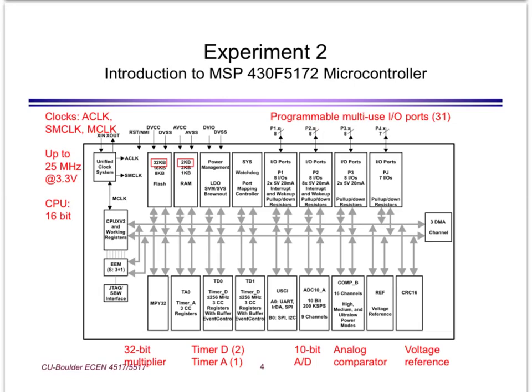Here is a block diagram of the microcontroller. It has, as usual, a host of programmable multipurpose IO ports, and a variety of peripherals that are very useful in the lab — in particular high-resolution timers and analog-to-digital converters. The chip is primarily intended for low-power applications, but it can be clocked up to 25MHz and operated from 3.3V.